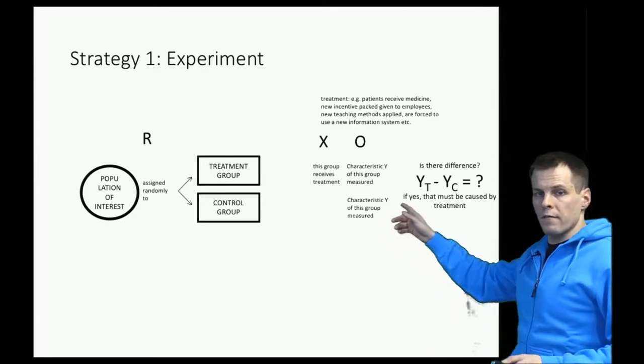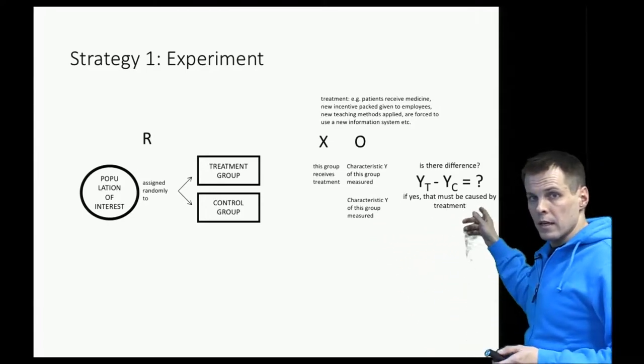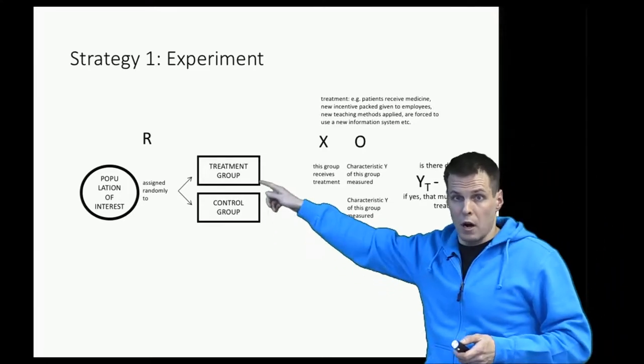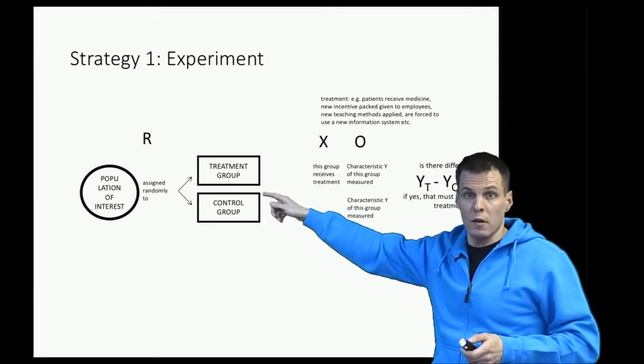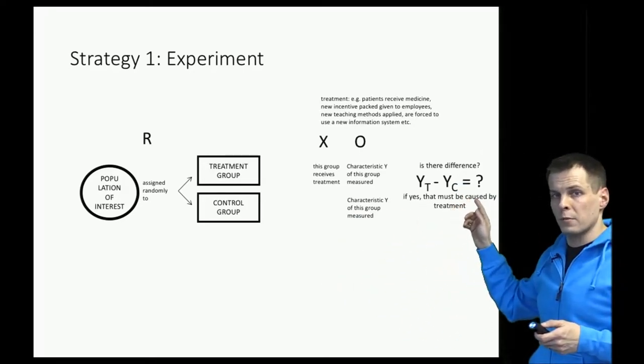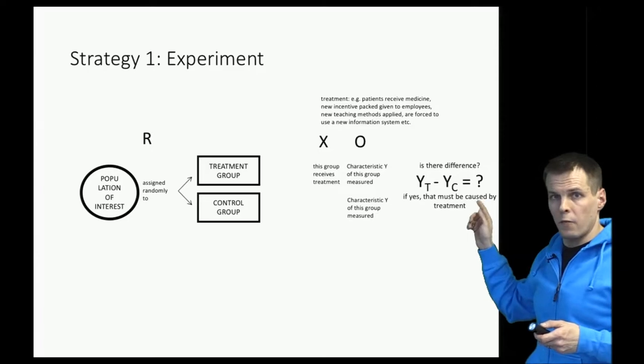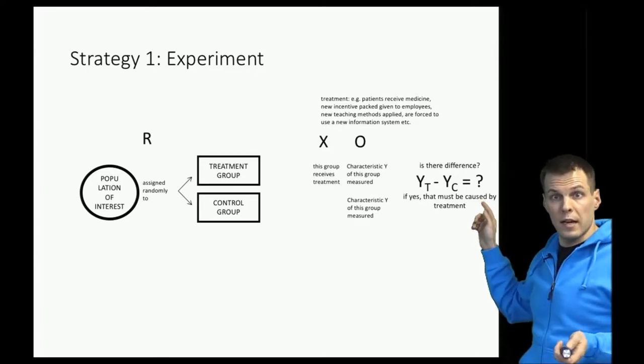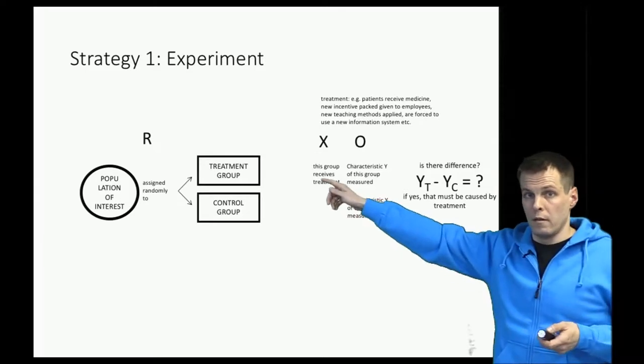Why this is a valid causal claim is that these groups are perfectly comparable to start with because they're randomly chosen from the same sample. Therefore, the only plausible explanation beyond chance for a difference between the groups is that there is an actual effect of the treatment.